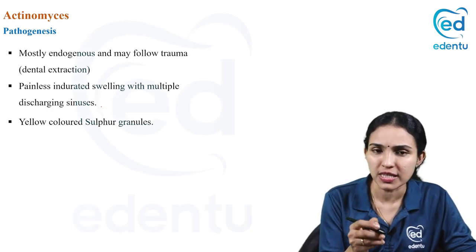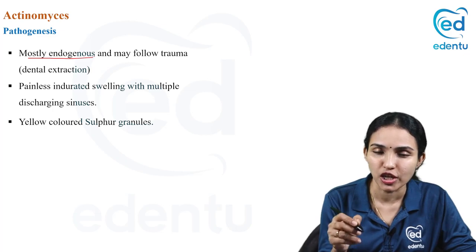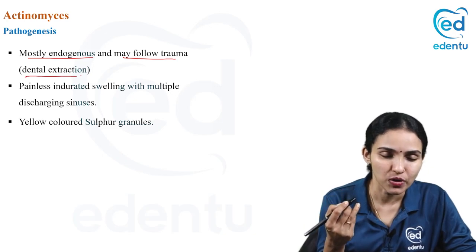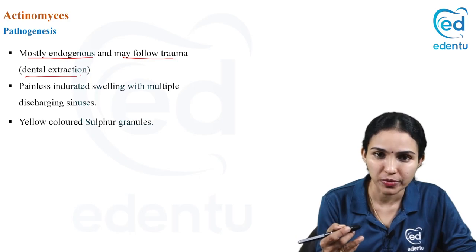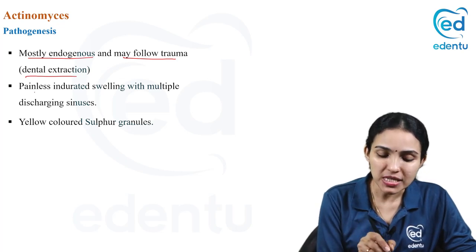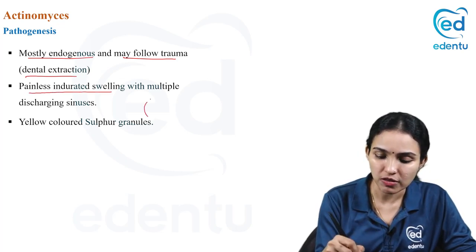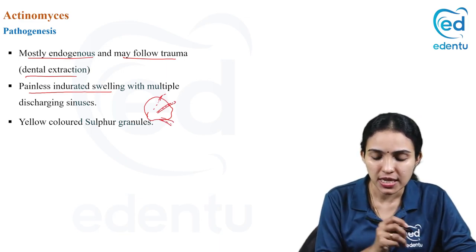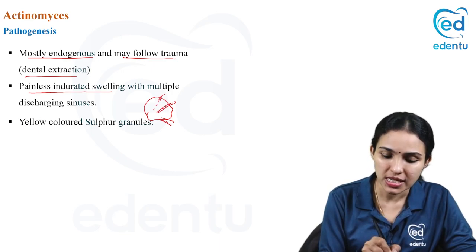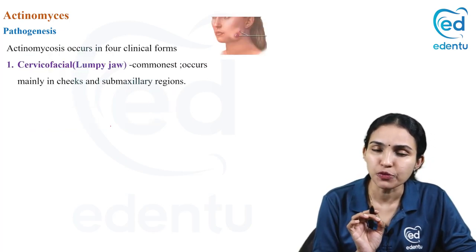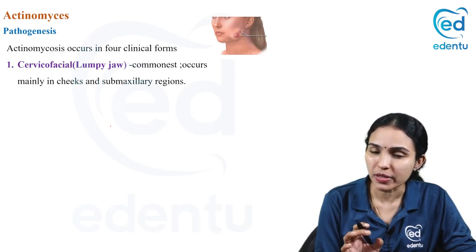Actinomycosis is not an exogenous infection — most actinomyces species are endogenous and usually follow trauma, such as dental extraction. It initially presents as a painless indurated swelling with multiple discharging sinuses through which granules are discharged. The granules produced in actinomycosis are yellowish-colored sulfur granules composed of bacteria.